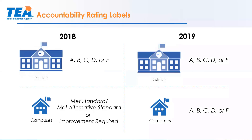House Bill 22 was passed, and in 2018, we assigned districts a rating label of A, B, C, D, or F, but campuses still received a met standard or met alternative standard rating. Campuses that did not meet standards were IR in 2018. For 2019, both districts and campuses will receive A, B, C, D, or F labels. So 2019 is the first year that all campuses in the state of Texas will receive a rating label of A through F.